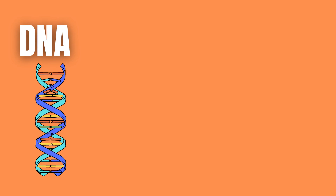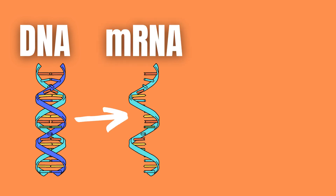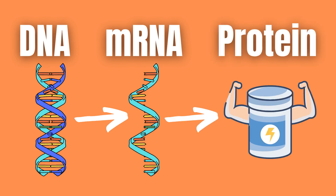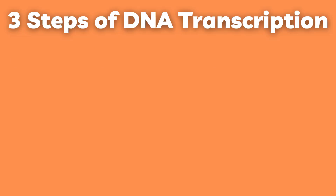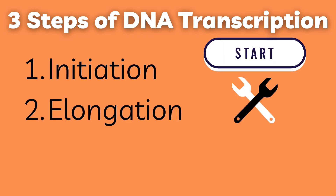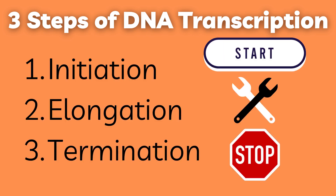DNA transcription is the process of converting DNA into messenger RNA or mRNA, which will then be converted to amino acids through translation, ultimately creating a protein. DNA transcription is carried out in three main steps which are initiation, elongation, and termination.